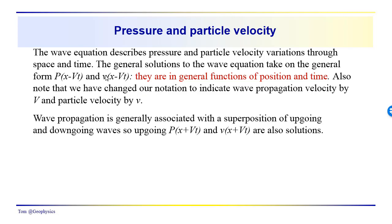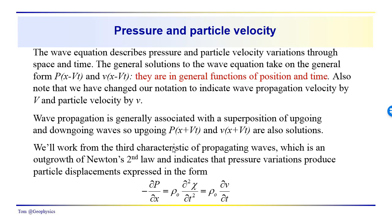The solutions p(x minus Vt) and v(x minus Vt) are pressure disturbances propagating in the positive x direction. When we have x minus Vt, we're looking back to see what the shape of the disturbance was at some earlier point in time. In general, we're going to have a superposition of up-going and down-going waves, so p(x plus Vt) and v(x plus Vt) are also solutions, along with superpositions representing reflected wave fields superimposed on down-going wave fields.